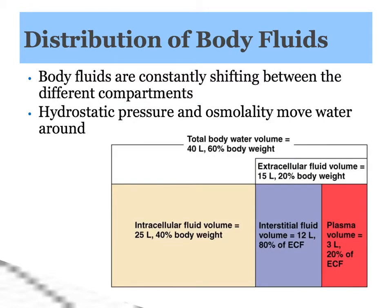Let's start by talking about where fluid is found in your body. Body fluids are constantly shifting between three different compartments, and this diagram gives you a graphic of that. One compartment is the intracellular fluid, the fluid that is inside the cells. Another compartment is the interstitial fluid, the fluid that's outside of the cell, between other cells, kind of filling in the cracks. And then the third section is the plasma volume, or the fluid that is inside the bloodstream.